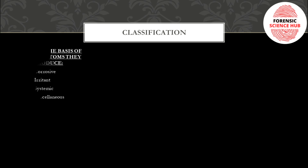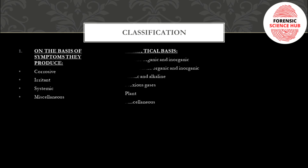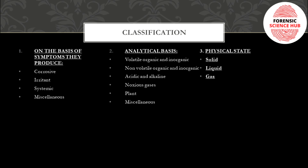Now let's talk about classification. Classification can be done on the basis of symptoms produced, giving four types: corrosive, irritant, systemic, and miscellaneous. On the basis of analytical classification, they can be divided into volatile organic, volatile inorganic, non-volatile organic, non-volatile inorganic, acidic, alkaline, noxious gases, plant, and miscellaneous. On the basis of physical state, there are three types: solid, liquid, and gas.